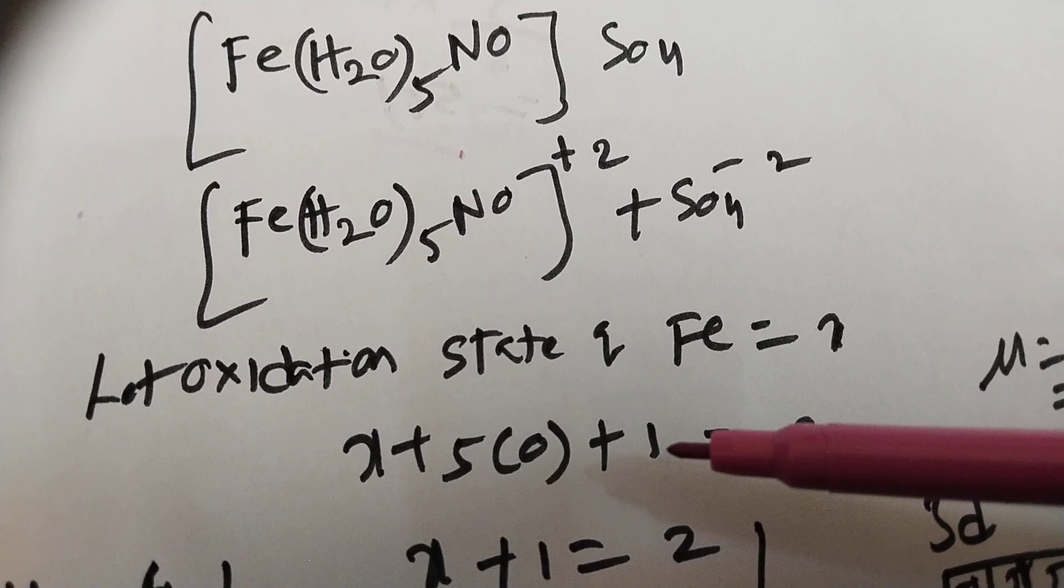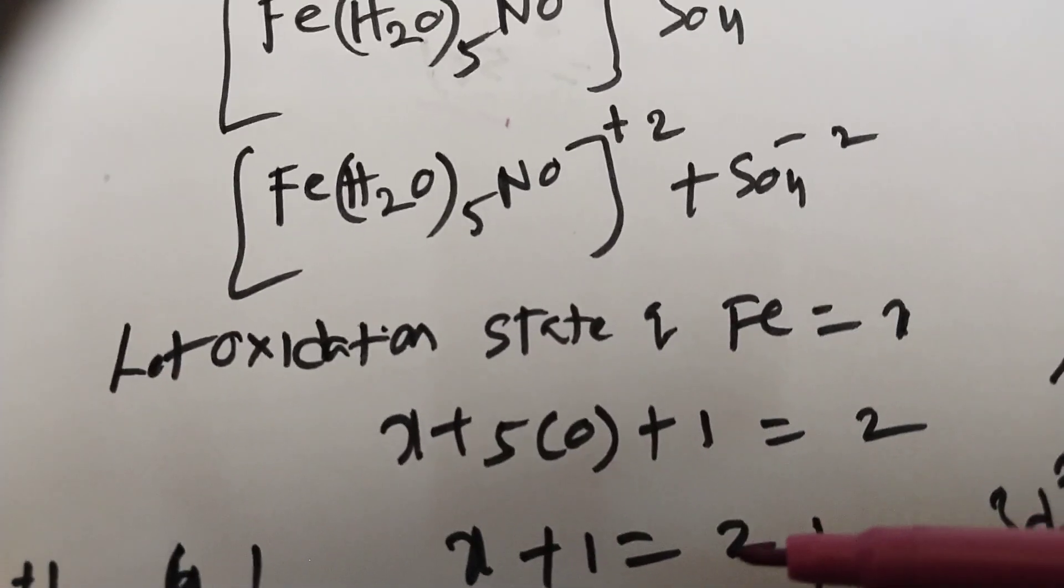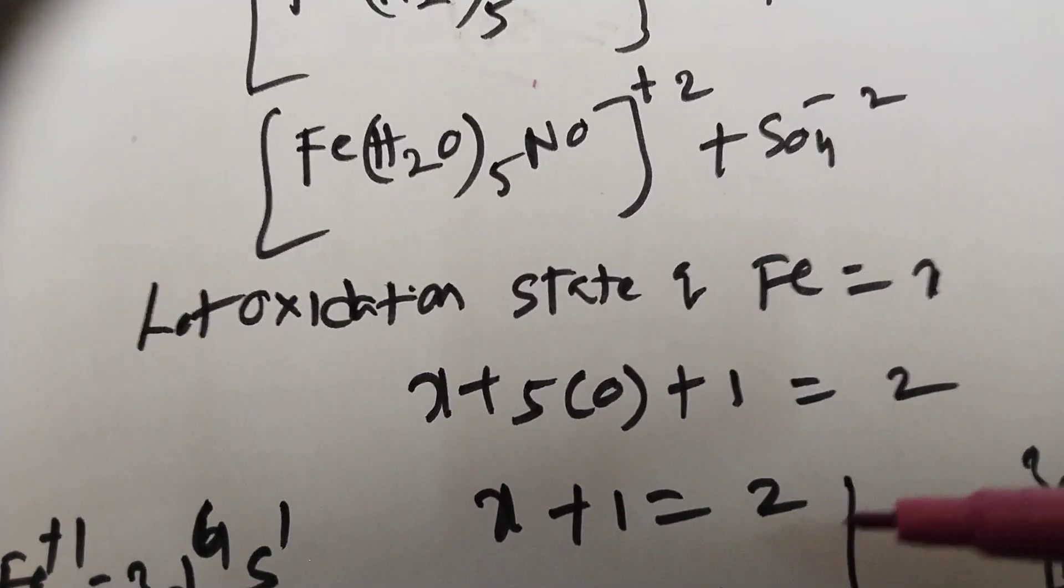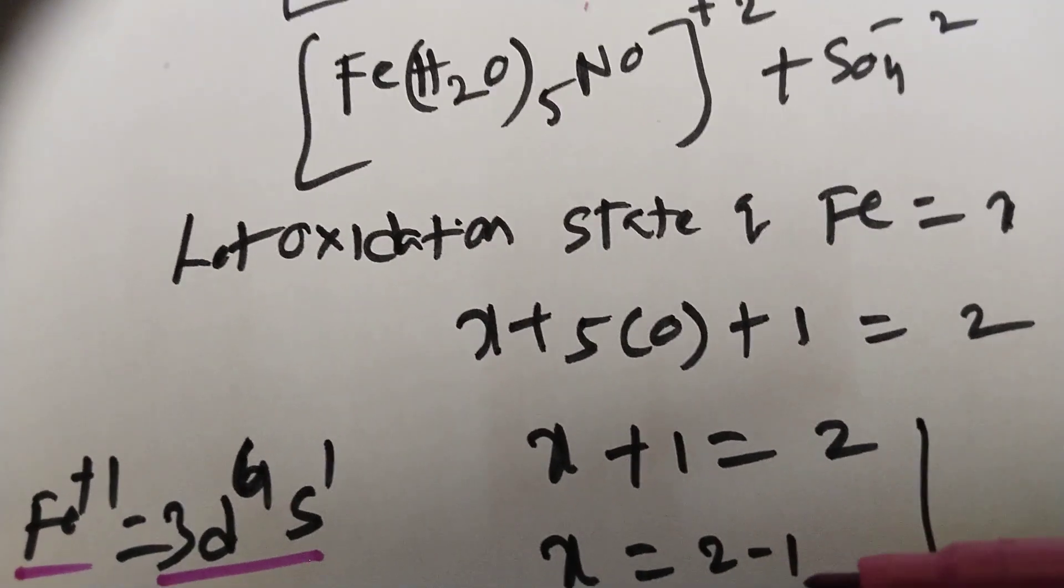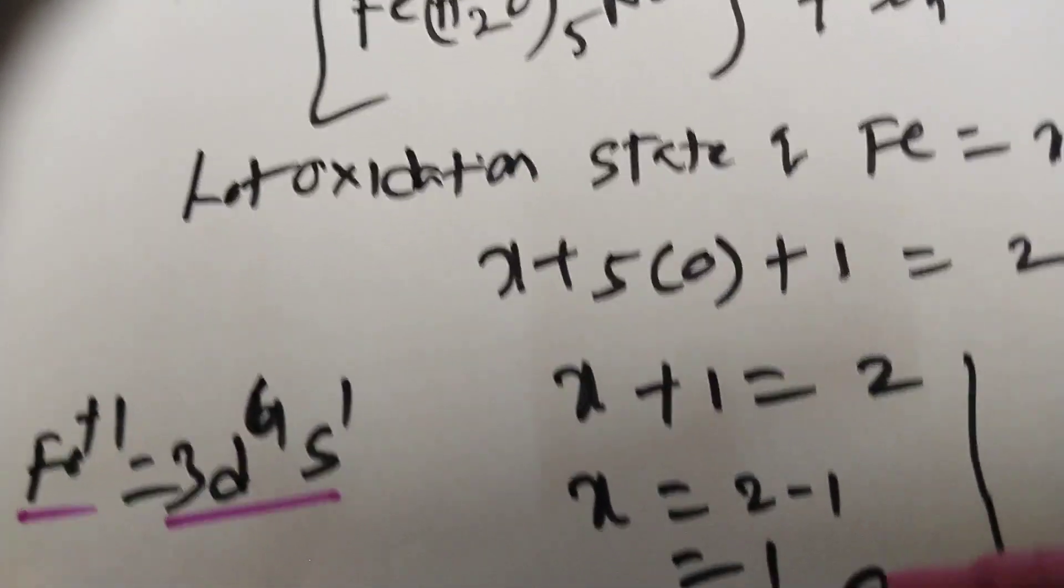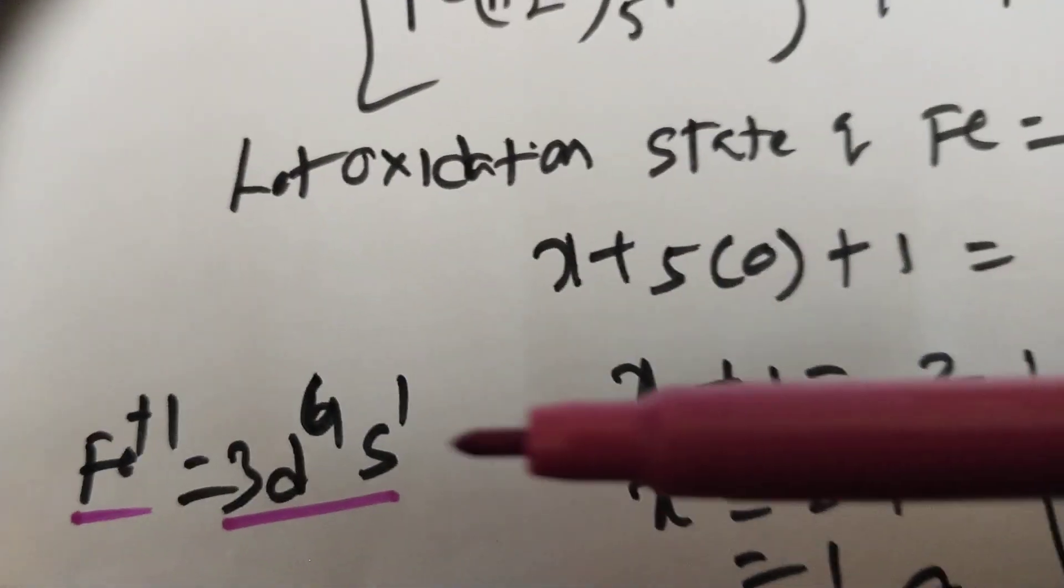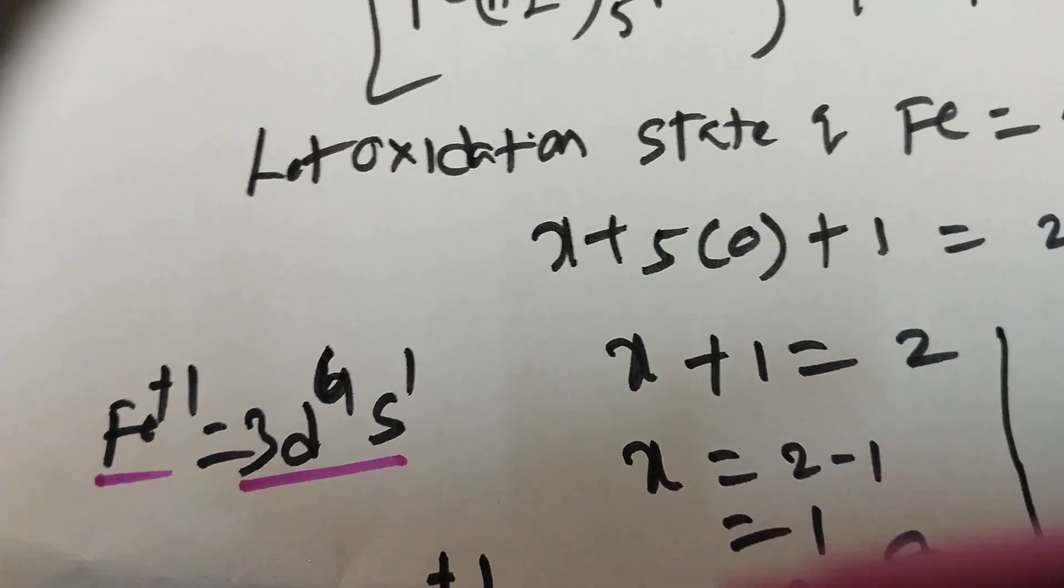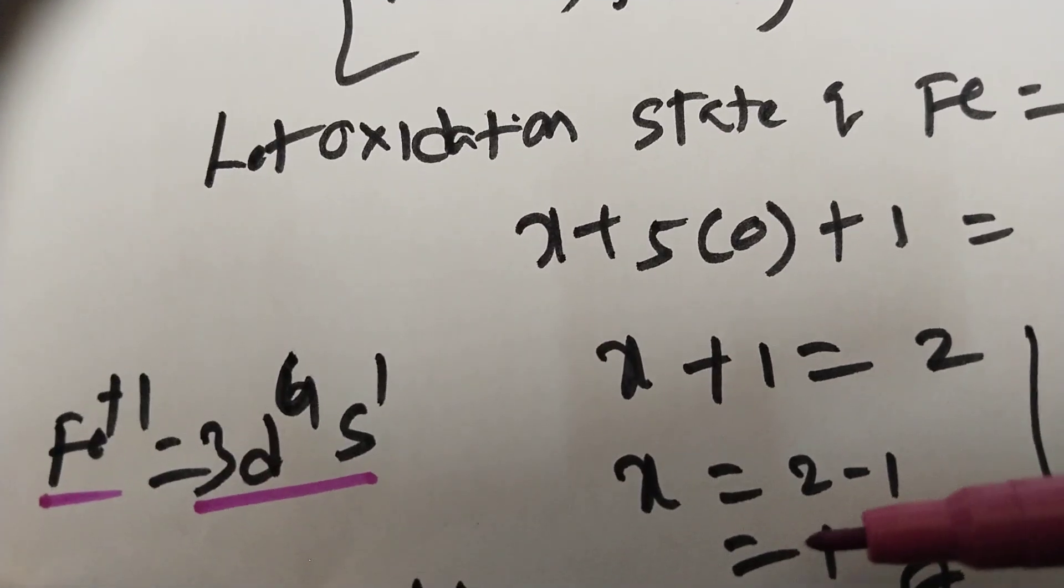X, this is 5 into 0, plus NO plus 1 is equal to 2. 5 into 0 is 0, plus 1. X plus 1 is equal to 2, X is equal to 2 minus 1, that is equal to 1. So oxidation state of Fe is plus 1.